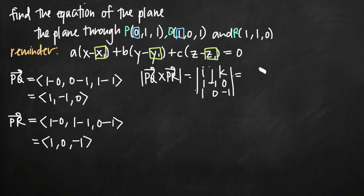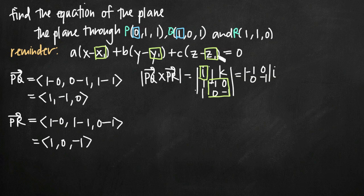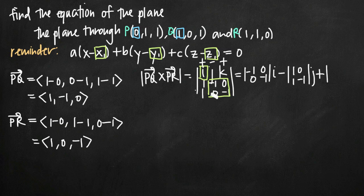We break this into its determinant parts, alternating signs. For i: we take the 2×2 submatrix outside i's row and column — that's (-1, 0; 0, -1) — multiplied by i. Then minus j times the submatrix (1, 0; 1, -1). Then plus k times the submatrix (1, -1; 1, 0). Remember: we multiply the upper-left by the lower-right, then subtract the product of the lower-left and upper-right.